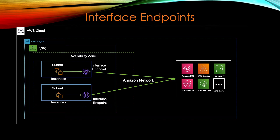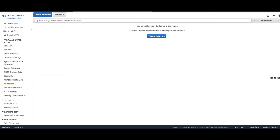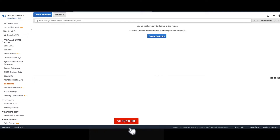Let's go to the console. We'll see how to create an interface endpoint, the different options available, and explain each option in detail. In the demo we'll show how, without an interface endpoint, you cannot access services from a private subnet, and once the endpoint is created, how you can access those services using the endpoint DNS. I'm logged into my AWS console — to find endpoints, go to the VPC dashboard and click on Endpoints.